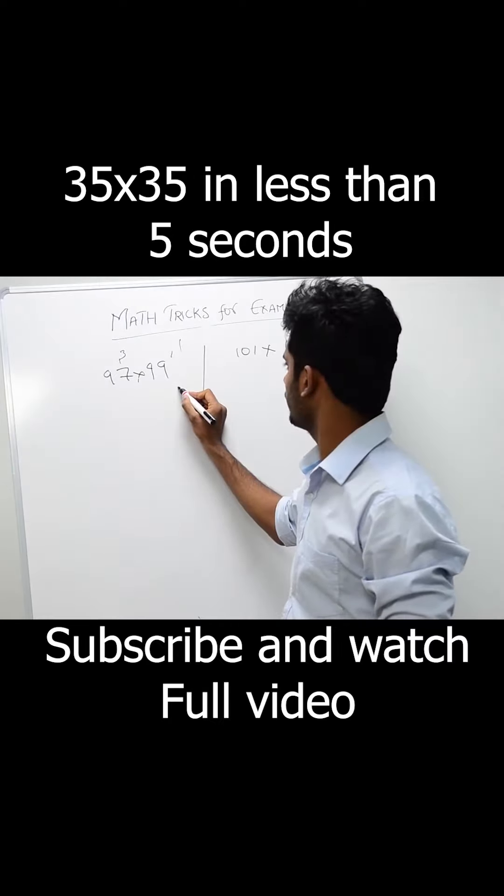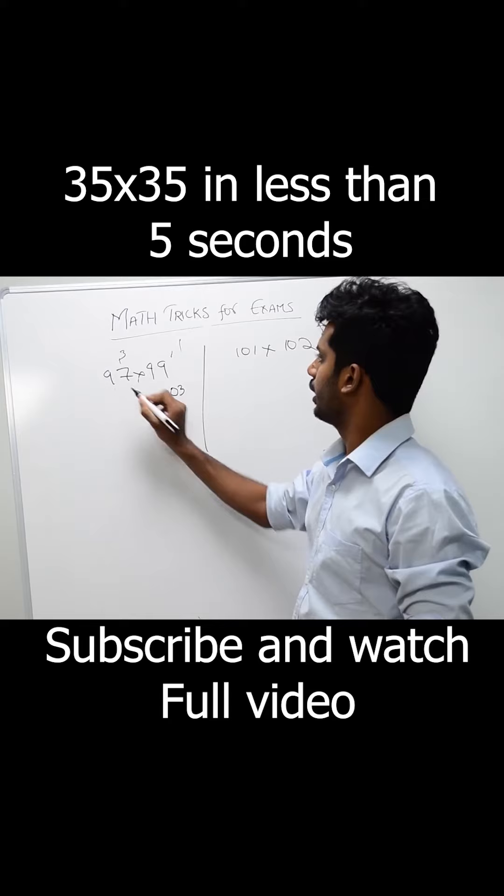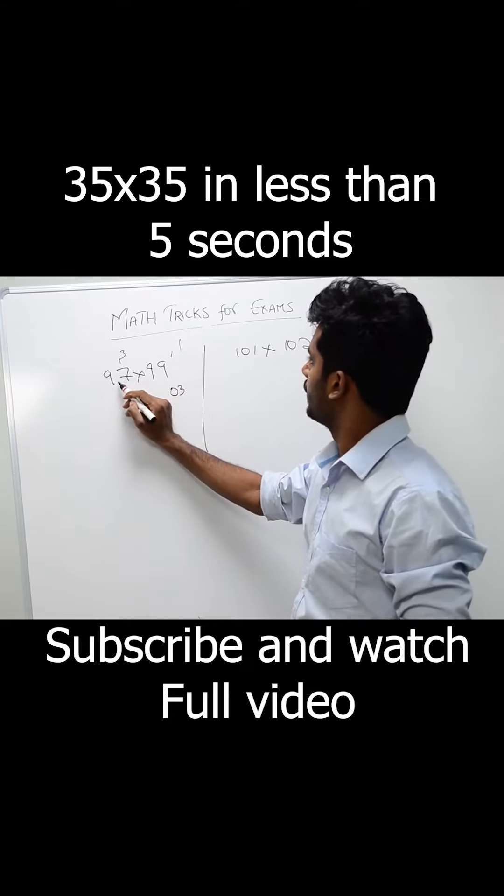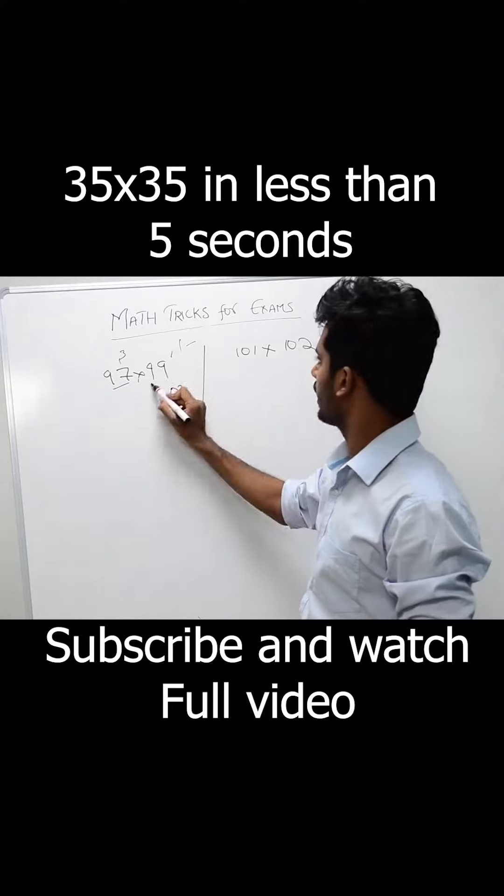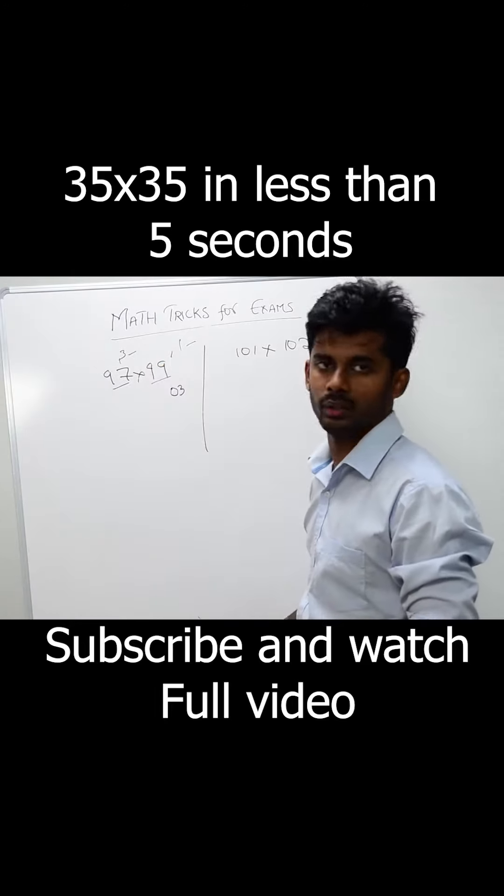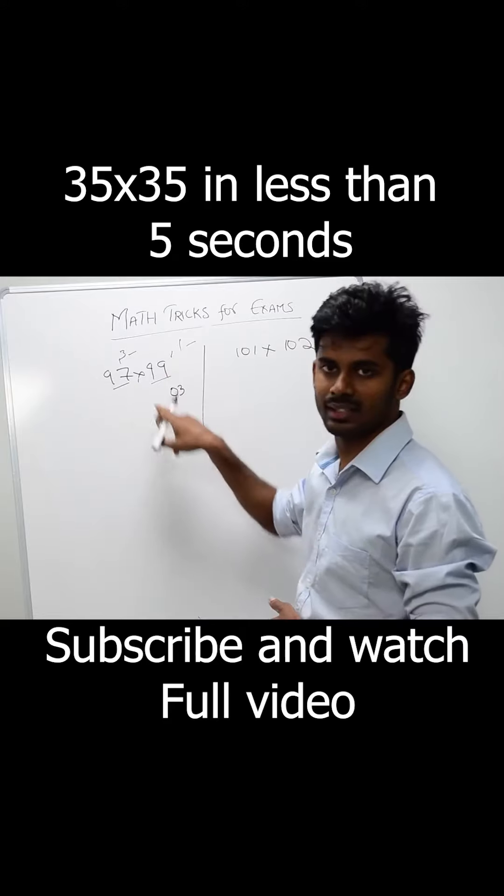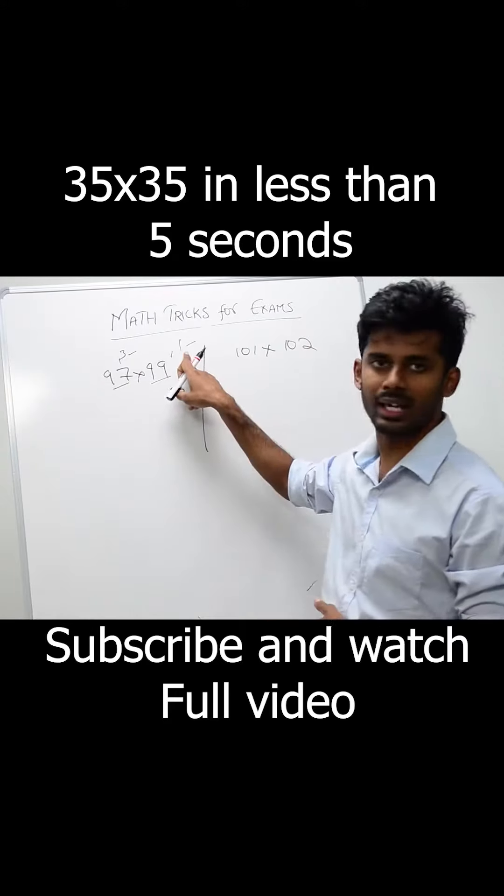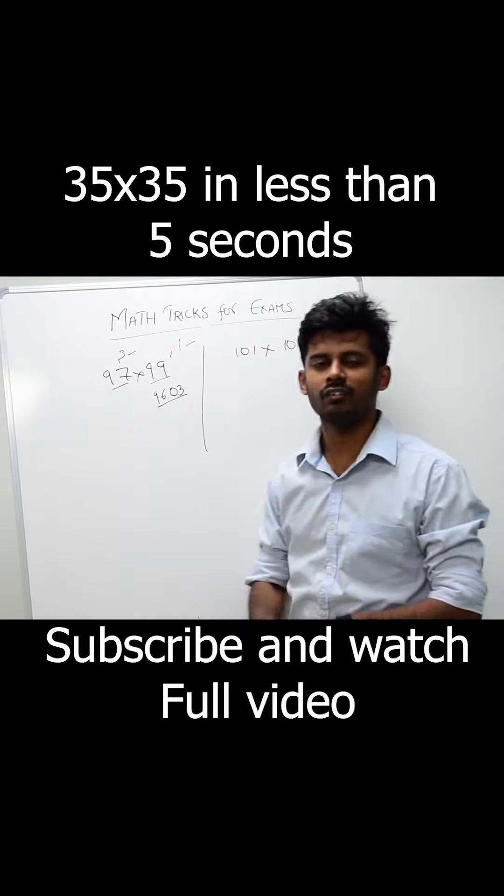Just write as it is. Single digit, we are writing 03, and 97 minus 1 you can do, or 99 minus 3. It gives the same results. See, 99 minus 3 is 96, 97 minus 1 also 96. So the answer is 9603. You can just do it in a fraction of seconds.